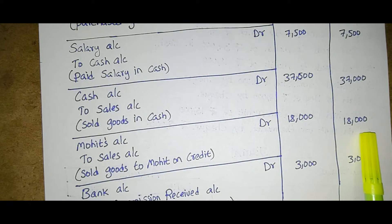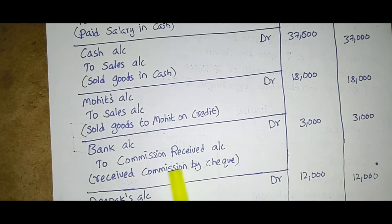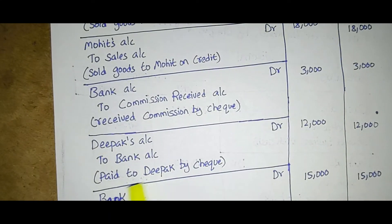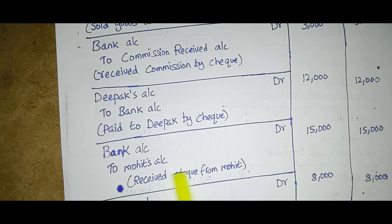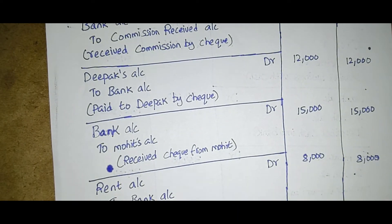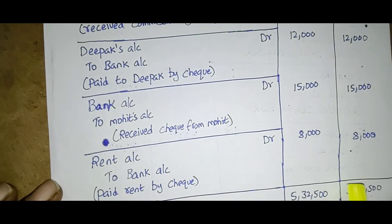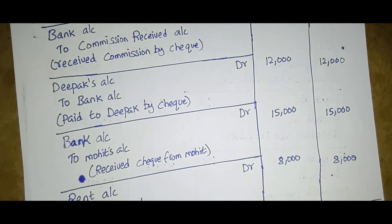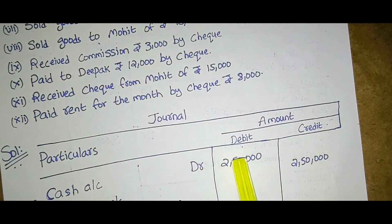Mohit's account Dr. to sales account — sold goods to Mohit on credit; eighteen thousand debit and eighteen thousand credit. Bank account Dr. to commission received account — received commission by cheque; three thousand debit and three thousand credit. Deepak's account Dr. to bank account — paid to Deepak by cheque; twelve thousand debit and twelve thousand credit. Bank account Dr. to Mohit's account — received cheque from Mohit; fifteen thousand debit and fifteen thousand credit. Rent account Dr. to bank account — paid rent by cheque; eight thousand debit and eight thousand credit.